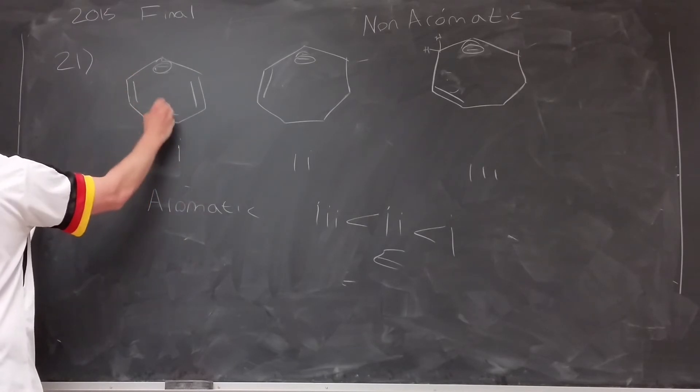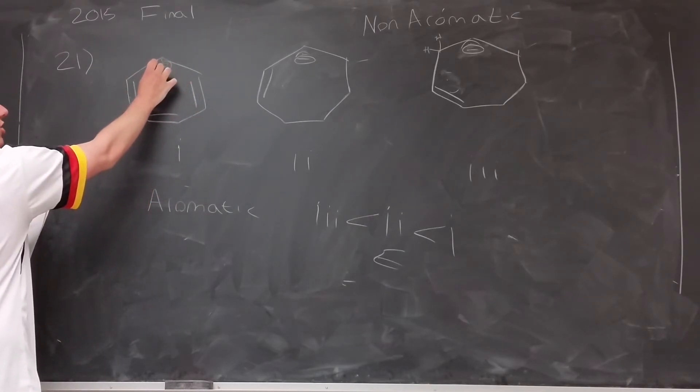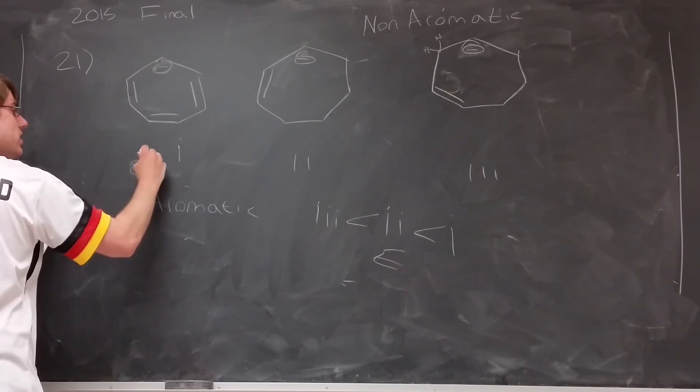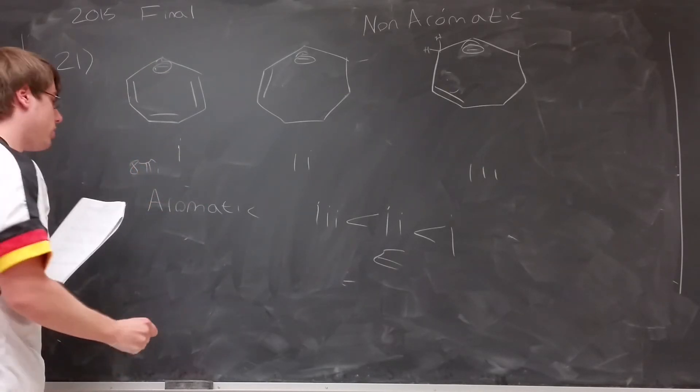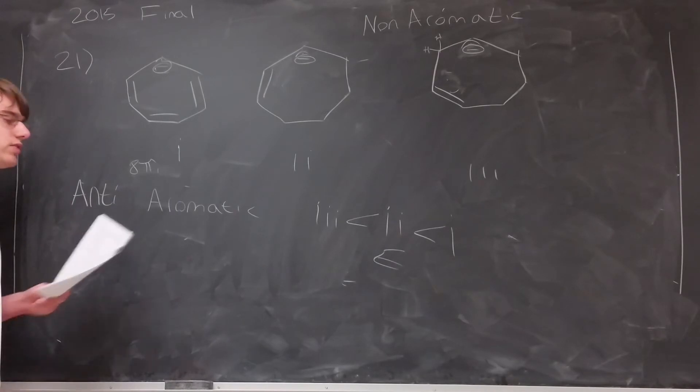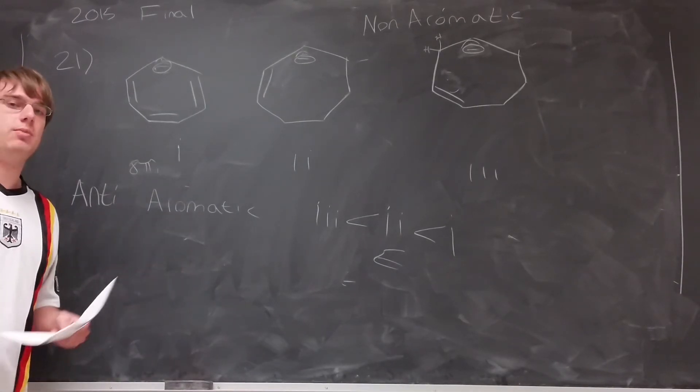And now I have to do my pi electron counting. And if I count my pi electrons, 2, 4, 6, and then a negative charge or a lone pair is also worth 2, so I have 8 pi electrons. 8 is a multiple of 4, and if you have a multiple of 4 pi electrons, you are anti-aromatic. And anti-aromatics, like I was saying before, are the least stable structure.